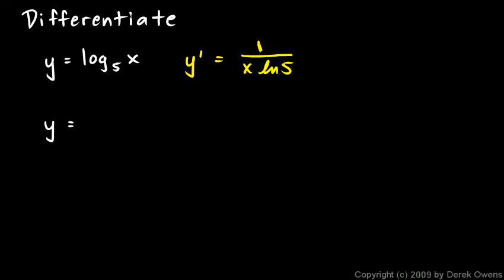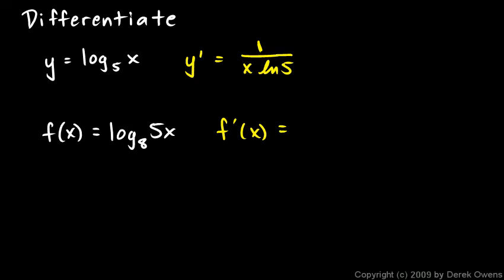Let's do another one. f(x) equals log base 8 of 5x. The derivative f'(x) is going to be 1 over (5x) times the natural log of 8. But 5x is the inner function inside the logarithm, so we need to apply the chain rule and multiply by the derivative of 5x, which is 5. Those 5s cancel, leaving 1 over (x · ln 8).